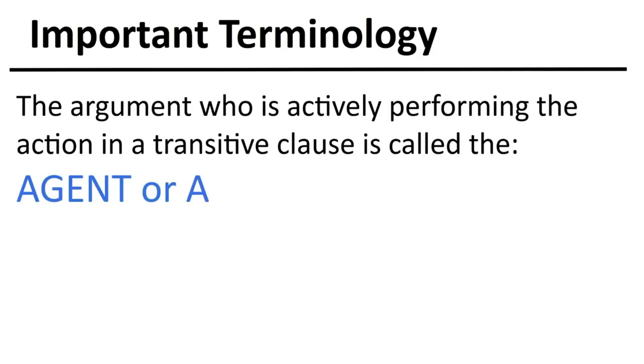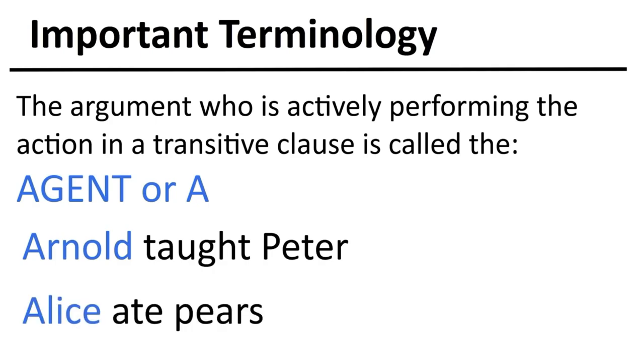The argument who is actively performing the action in a transitive clause is called the agent, often abbreviated as A. In the sentence Arnold taught Peter, Arnold would be the agent, since Arnold is the one who is actively teaching Peter. In the sentence Alice ate pears, Alice would be the agent, since Alice is the one who is actively eating the pears.